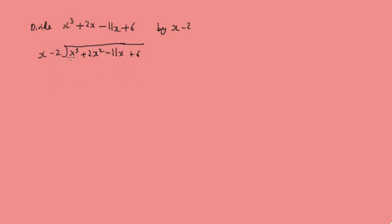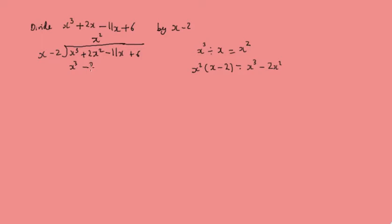The first step is we look at x³ and divide it by x. The reason we divide by x is so when we come to do the multiplication, the x³ part will disappear. So x³ divided by x is x², and we put x² in the quotient. Then we do x² multiplied by the divisor, giving us x³ minus 2x², and we write that below.